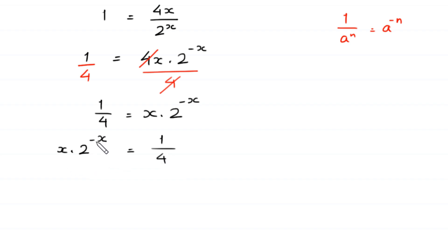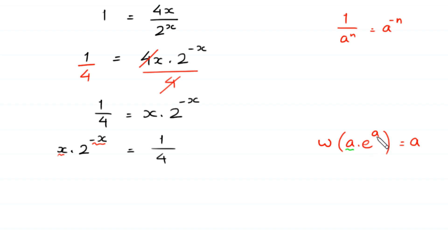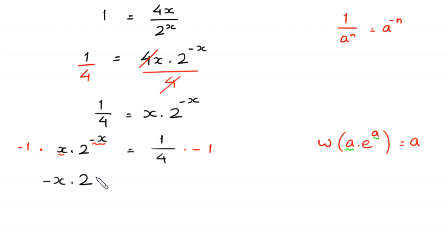Now we want to use the Lambert W function, which states W of a times e to the power a is equal to a. To use the Lambert W function we must have the same expression in both positions. But here we have negative x and there we have positive x. To make x negative, we multiply both sides by negative 1, giving us negative x times 2 to the power negative x is equal to negative 1 over 4. Now we have the same expression negative x in both positions.